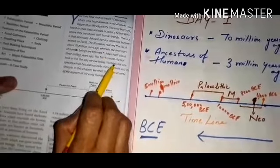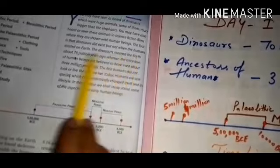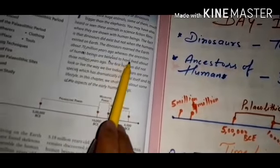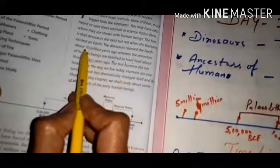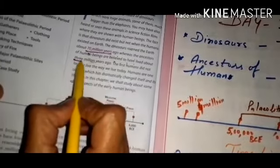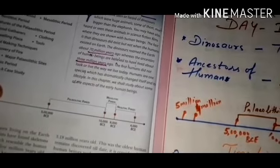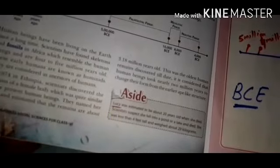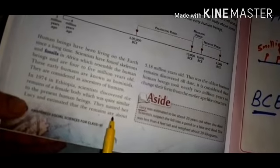Children, you all are interested in dinosaur movies. Do you know that dinosaurs roamed the earth about 70 million years ago, whereas the ancestors of human beings are believed to have lived about 3 million years ago? In 1974, in Ethiopia, scientists discovered the remains of a female body quite similar to the present human being, and they named it Lucy. It is estimated that those remains were 3.18 million years old.